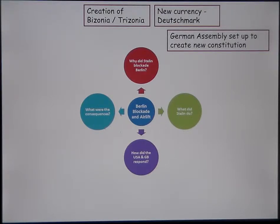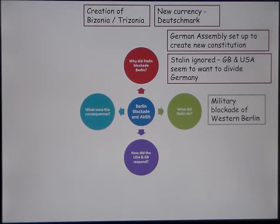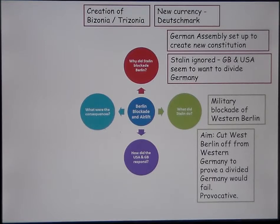Stalin was angry because he felt ignored, and Britain and the USA seemed happy to divide Germany in a way not agreed at the conferences. So Stalin blockaded Western Berlin. Remember, West Berlin is within the eastern quarter of Germany itself. Stalin shut down road, rail and canal access into West Berlin, trying to prove to the allies that a divided Germany wouldn't work and they couldn't maintain a capital in West Berlin. He was also keen to force them out of West Berlin, as it was an opportunity to spy behind the Iron Curtain. He was being deliberately provocative, but not threatening war.